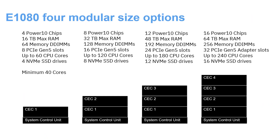These CEC nodes are very much a building block. We can have a machine with one CEC, two CECs, three CECs, or four CECs and one system controller in all cases. Each CEC has four Power 10 CPUs, a maximum of 16 terabytes of memory, 64 memory DIMM slots, eight PCIe Gen 5 adapter slots, up to 60 CPU cores, and four NVMe solid-state drives — probably for booting a pair of virtual I/O servers. With two CECs it's double that, three CECs triple, and four CECs quadruple all of those numbers. A regular building-blocks machine.